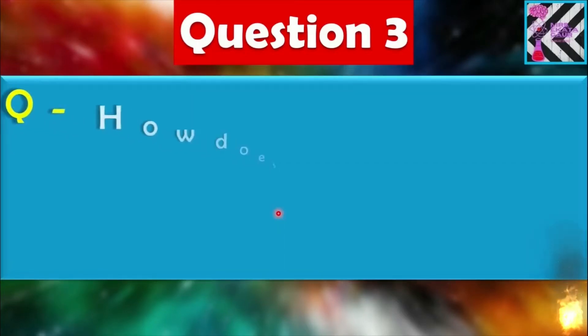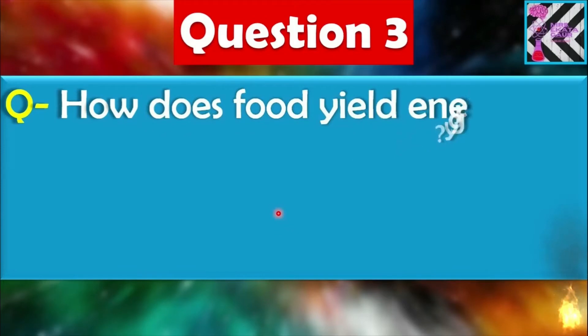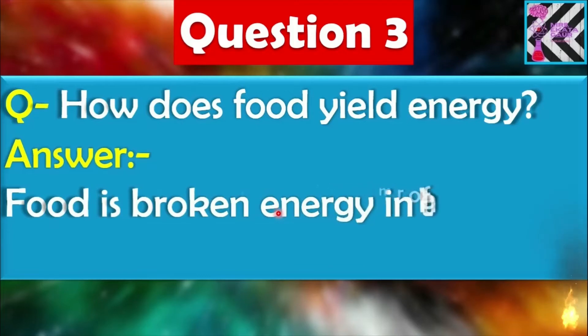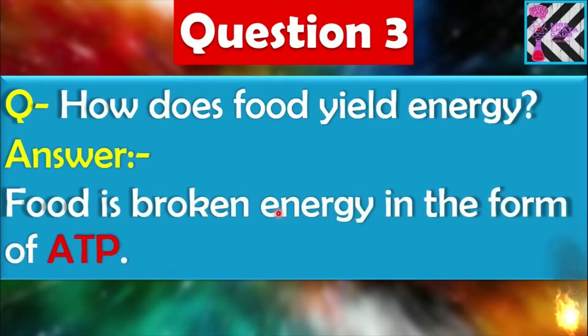Question number three: How does food yield energy? Food is broken down to release energy in the form of ATP.